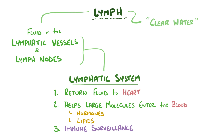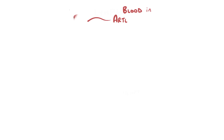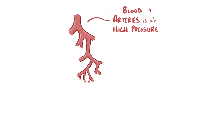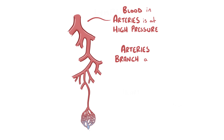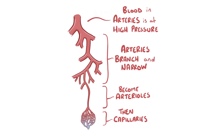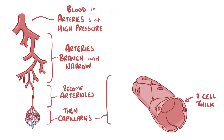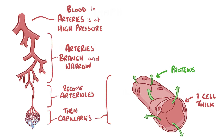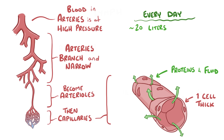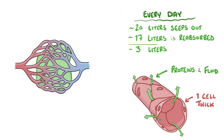The blood in the arteries is under a lot of pressure because it needs to reach every little nook and cranny of the body. Those arteries branch out into narrower and narrower arteries, then arterioles, until finally it gets to the capillaries, which have walls that are only one cell thick and are slightly porous. Red blood cells are too big to fit through the capillary pores, but small proteins like albumin and fluid can make it through. Every day, 20 liters of fluid, water, and protein seep out of the capillaries and become part of the interstitial fluid between the cells. About 17 liters gets quickly reabsorbed back into the capillaries.